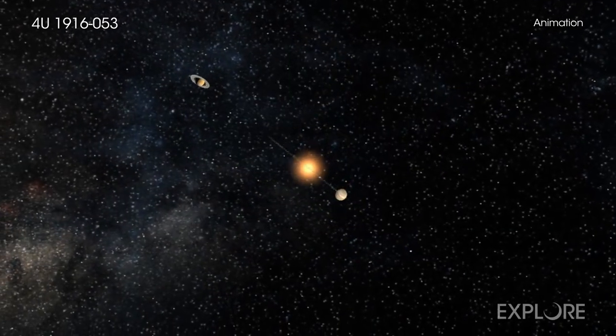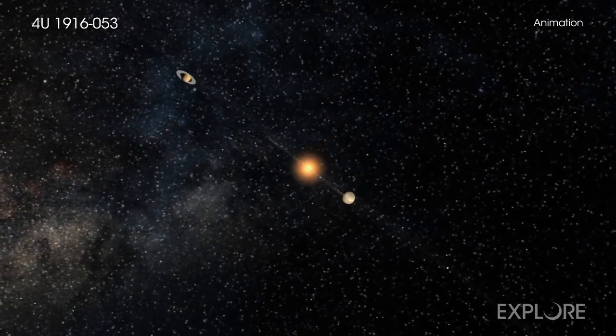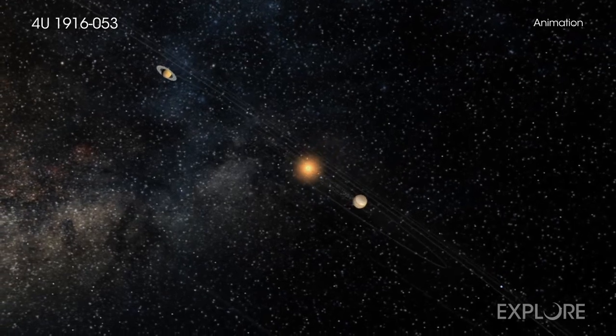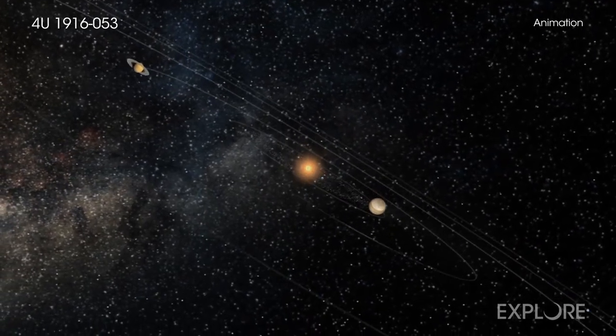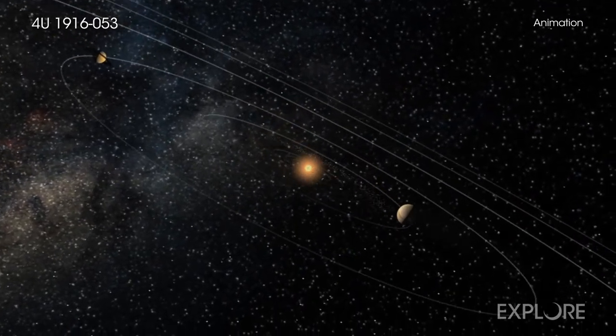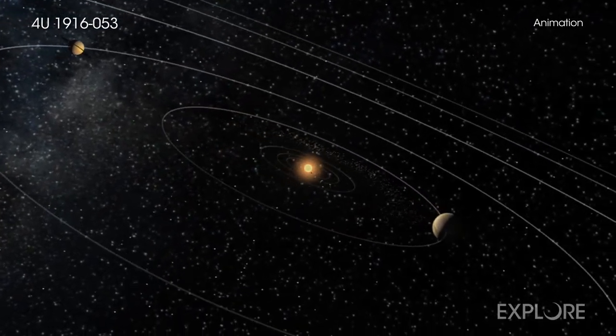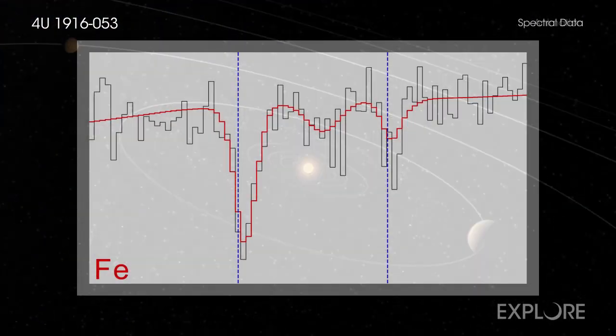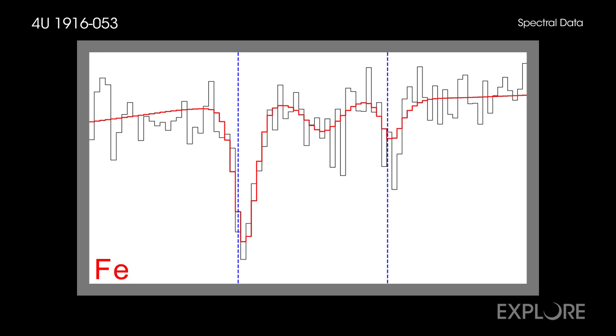While scientists have found incontrovertible evidence of gravitational redshifts in our solar system, it has been challenging to observe them in more distant objects across space. The new Chandra result provides convincing evidence for gravitational redshift effects at play in a new cosmic setting.